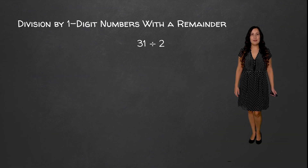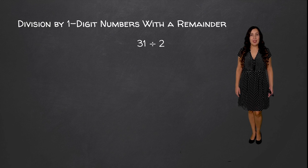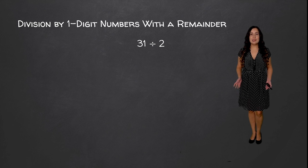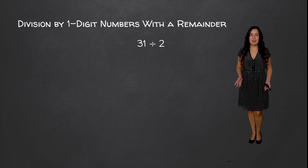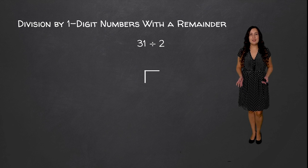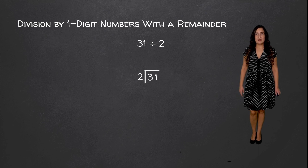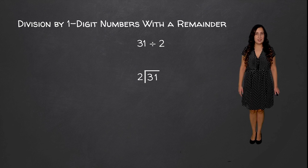To get us started we have 31 divided by 2. Now off the bat we know that 2 doesn't go into 31 evenly because 31 is not an even number. So let's divide and see what happens. Our dividend in this case is 31 and our divisor is 2.